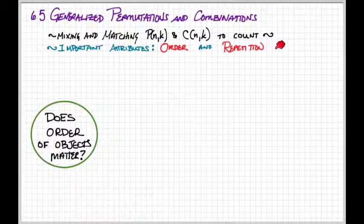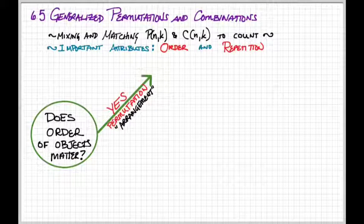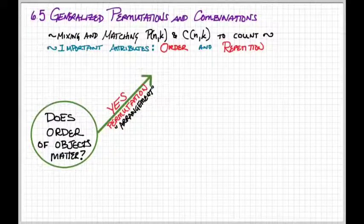So let's try and create a flowchart here. Does order matter for whatever we're doing, arrangements or selections? If the answer is yes, we're looking at a permutation and we're making an arrangement of something.